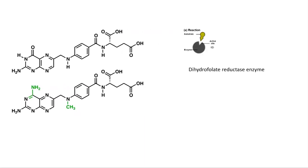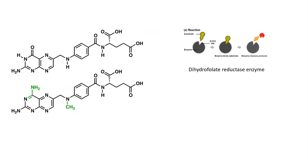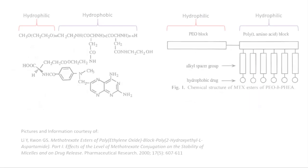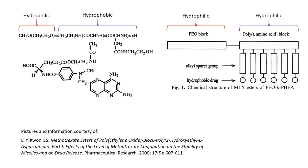Methotrexate acts as a competitive inhibitor to the coenzyme folic acid, where usually the substrate binds to the enzyme dihydrofolate reductase, DHFR. Here, methotrexate occupies the active site of the enzyme. The ideal drug distribution method releases drugs only at the site of infection, limiting the side effects of the drug targeting healthy cells. Thus, when methotrexate is administered, it can be chemically bonded to an amphiphilic block copolymer.